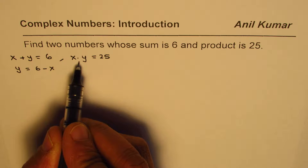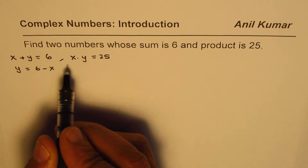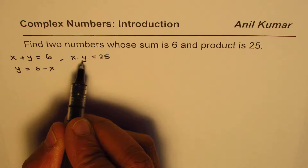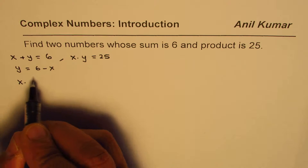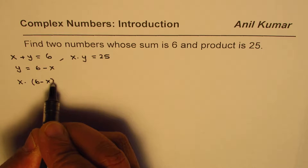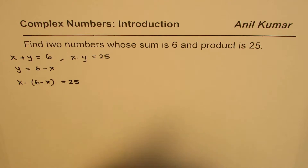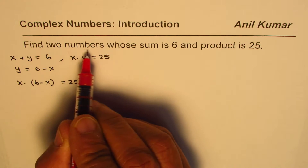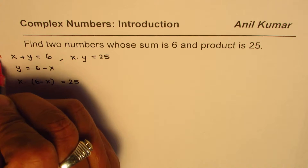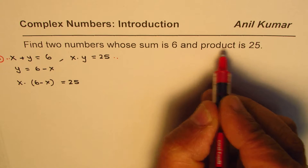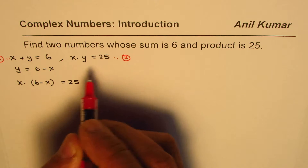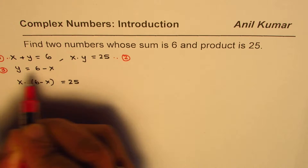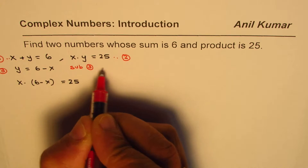Substitute y equals 6 minus x in the second equation to find x. We can write this as x times (6 minus x) equals 25. From the given question we found two equations: sum is 6 — call this equation 1; product is 25 — equation 2. Isolate y to get equation 3, then substitute equation 3 into equation 2.